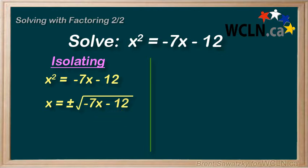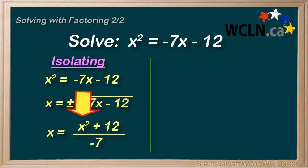If we try to isolate this x, we could shift things around, add 12 and divide by negative 7, but we still have an x over here. So again it's not isolated.